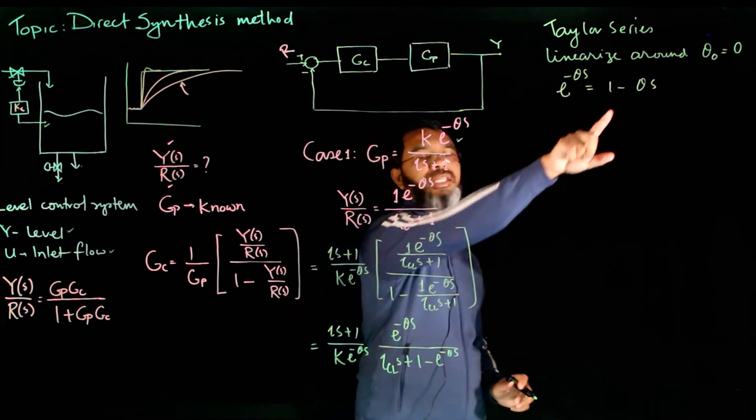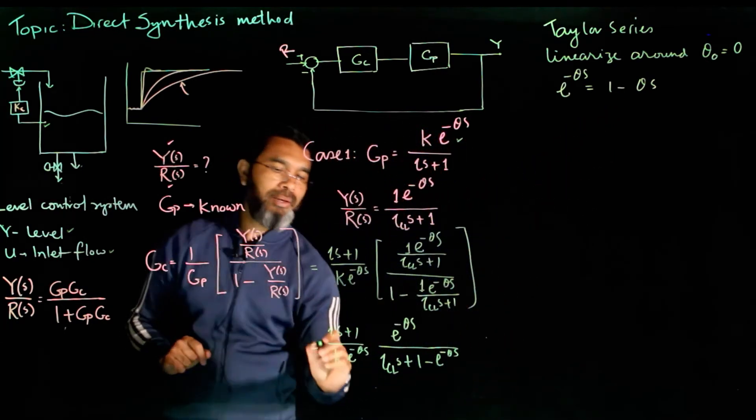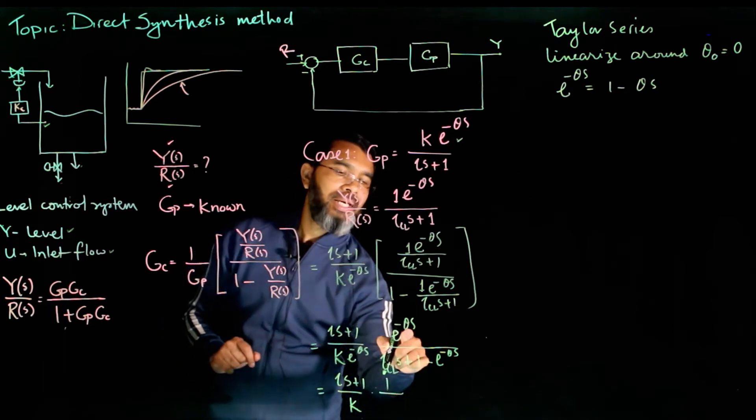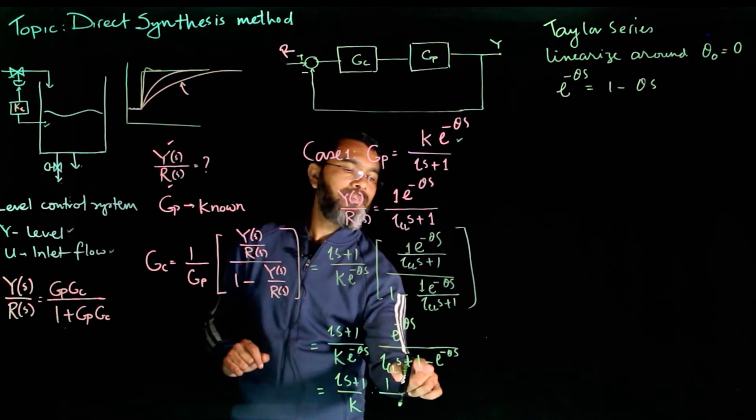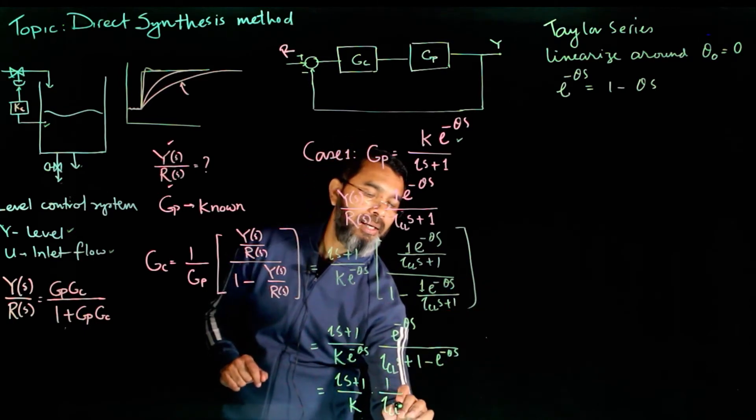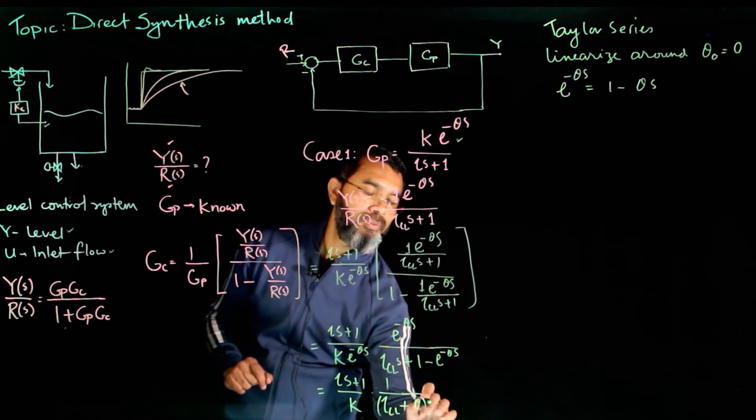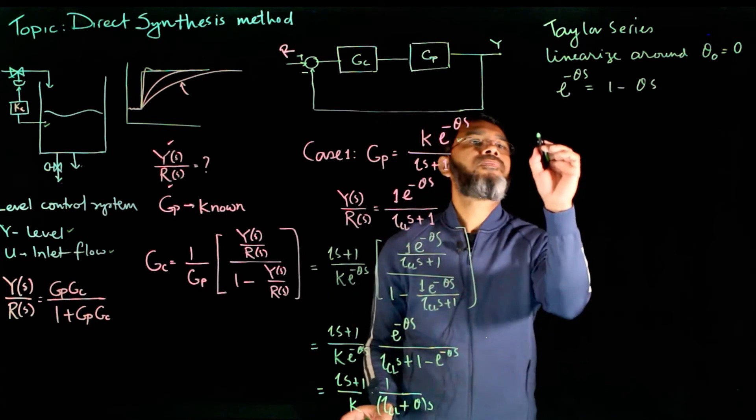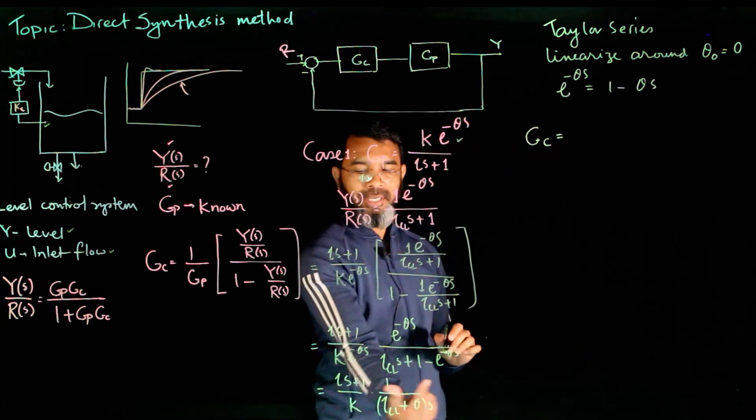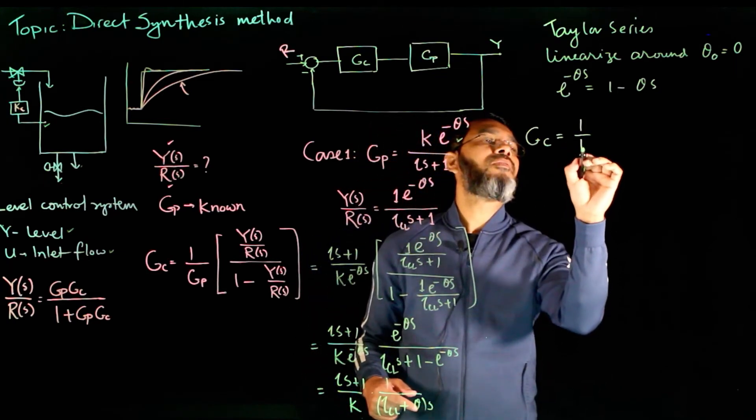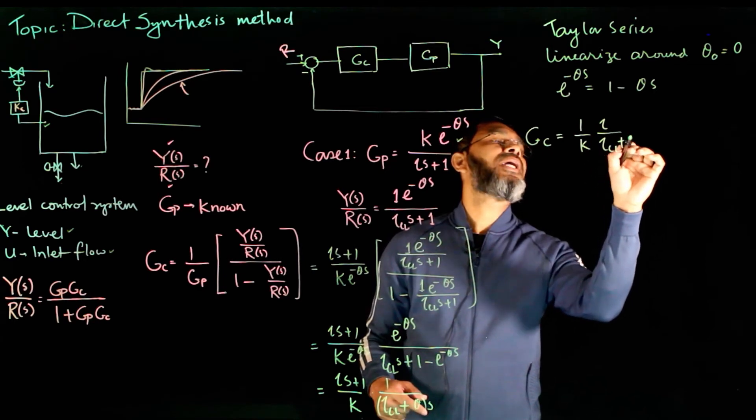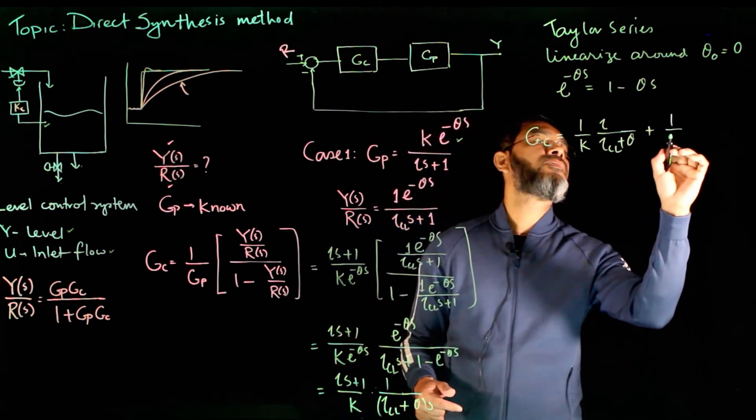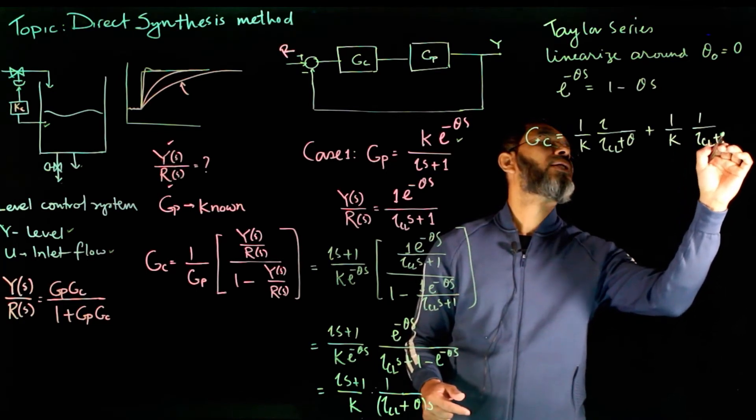If we do that, e^(-θs) will be 1 minus θs. Now if we plug in this value over here, we'll end up getting this Gc to be (τs + 1)/k, and this term will cancel out. When we plug in that value, we'll simply have τ_cl + θs. So now we'll get this controller in terms of Gc to be, if I separate these two terms, 1/k times τ/(τ_cl + θ) plus the second term 1/k times 1/(τ_cl + θ)s.